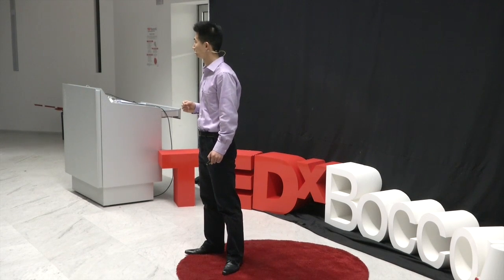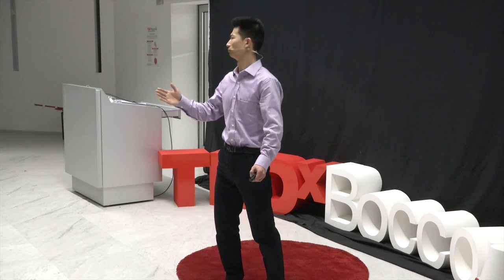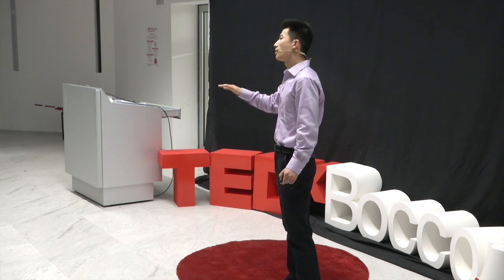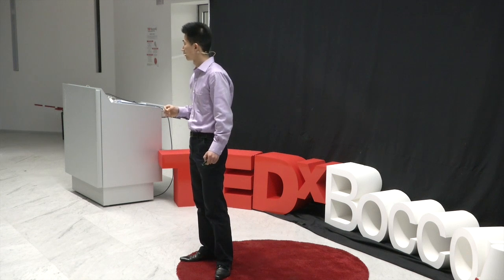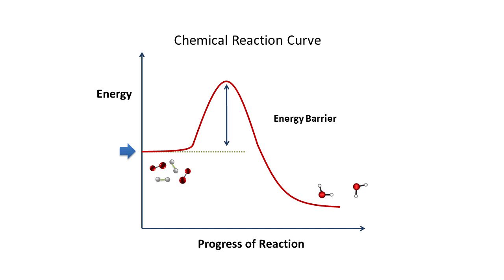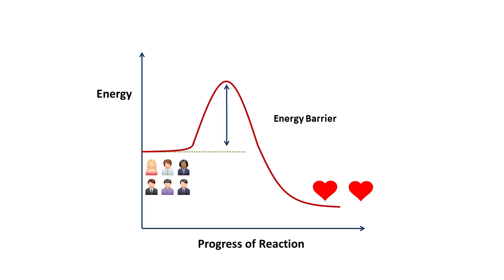After four years of disciplined, tedious, painstaking research, today is the first time I review the results. Are you ready? The Nobel Prize goes to the chemical reaction curve, which explains how all reactions happen, including your love reaction. I know this is a little bit technical, so bear with me. Reactions move from left to right. Molecules will start at the initial energy level. For a reaction to happen, we need to overcome an energy barrier to form the connections and reach the lower energy, more stable stage. Now let's replace the molecules with humans.